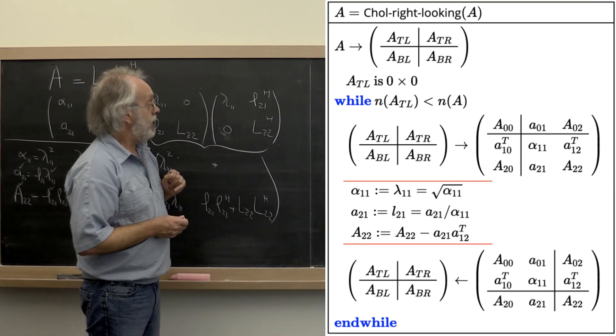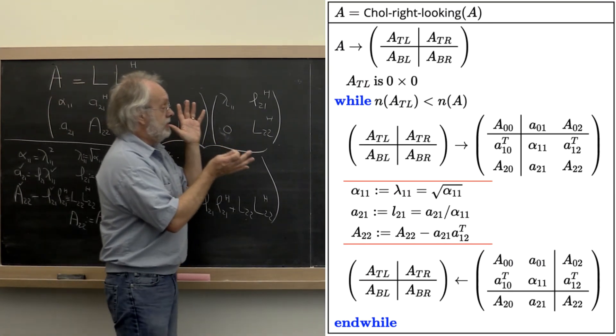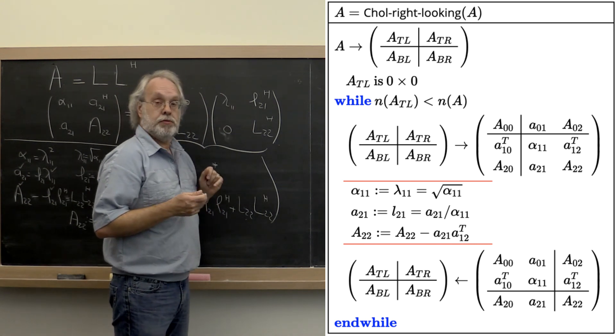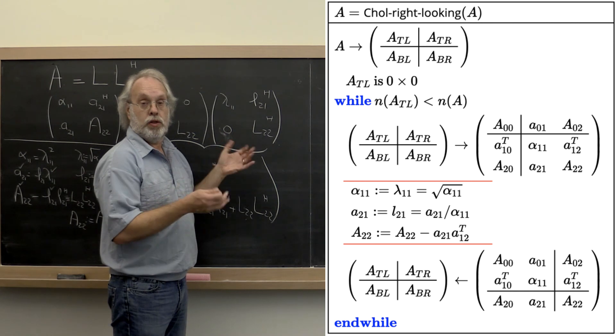Over here, what we have now is all of this summarized as an algorithm that overwrites matrix A, or rather the lower triangular part of matrix A with its Cholesky factor.